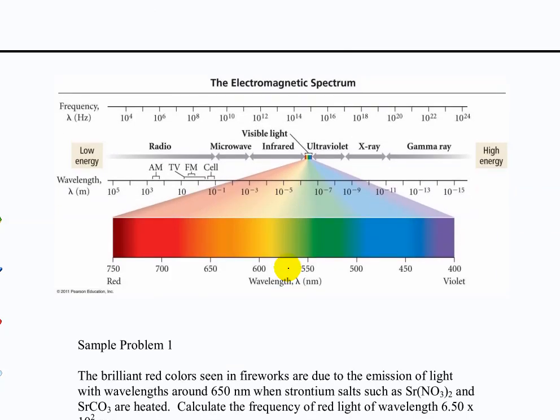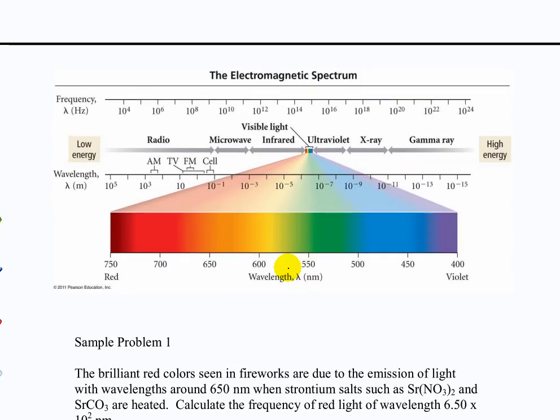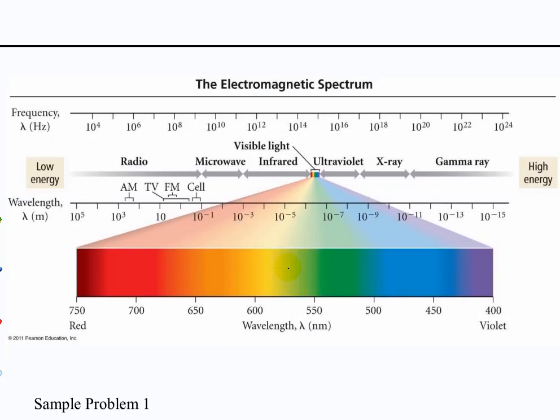All right. So let's take a look at the spectrum. Here's the electromagnetic spectrum. On the top, you see frequencies in hertz. And on the bottom, or in the middle, you see wavelength in meters. And this gives you a sense of where all these different energy radiations are. So high energy things are things with very, very short wavelengths, very, very high frequencies.